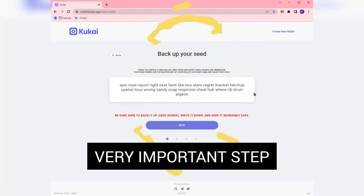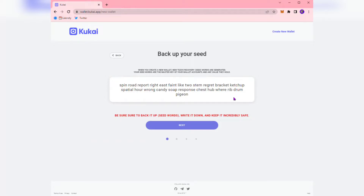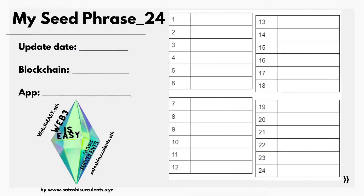This seed phrase gives total control of your wallet — it is basically a really long password. Take out your paper and copy the fields: date, blockchain name, app wallet name, and label 1 through 24. There's a link to this file in the description which you can print for free and write your seed phrase onto.